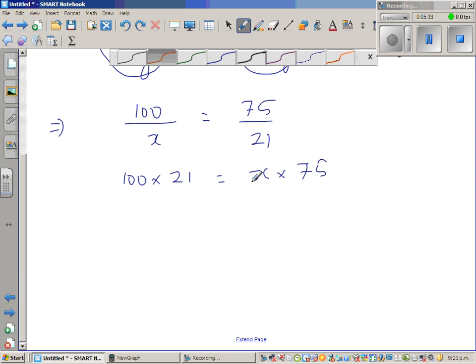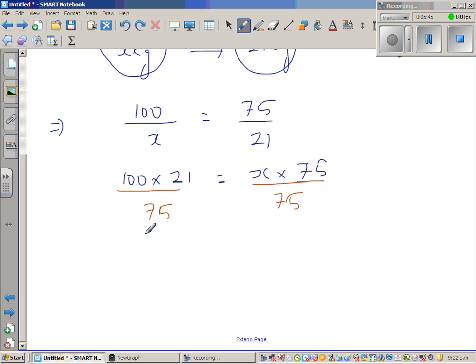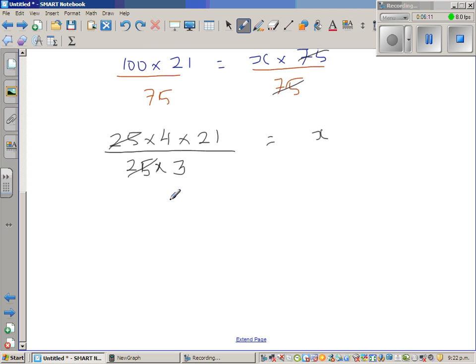So I want to find x. So what should I do? I want to get rid of the 75. So I'm going to divide this side by 75. Can I write this as 25 times 4 times 21 over 21 times 25 times 3 is equal to x. So this 75 and 75 gets cancelled. 25 and 25 gets cancelled. So this again 4 times 21 I can write as 3 times 7 over 3 is equal to x. So this 3 and 3 gets cancelled. So x is 28 kgs.